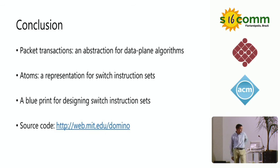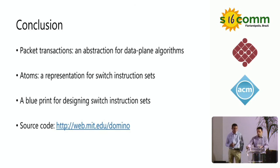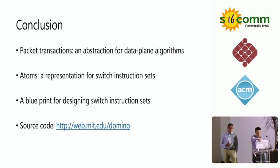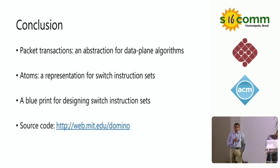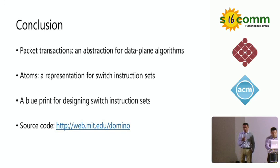Q (Marco Canini): Domino doesn't support for loops — have you thought about how to support them, even primitively? Many useful algorithms can be much better expressed with for loops. A: At the very least, we can support for loops that iterate a constant number of times and are compile-time unrollable — we can certainly provide that as syntactic sugar. We haven't done that yet, but we could. The general case, though — I don't think we can solve that.